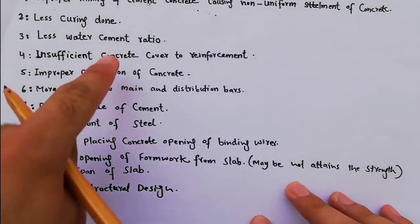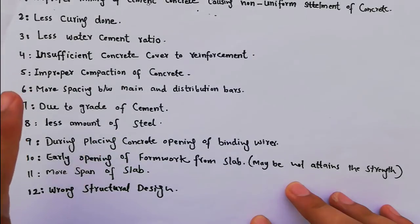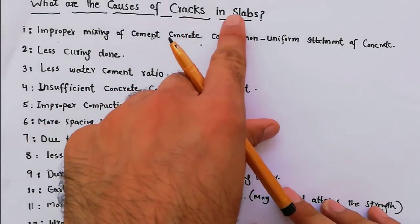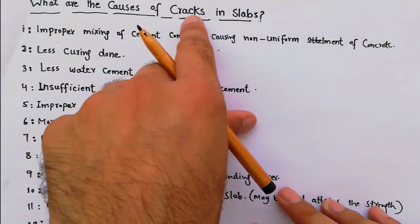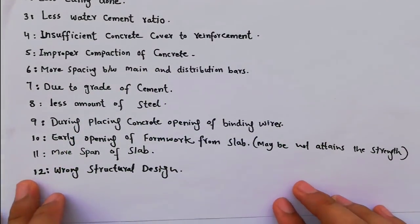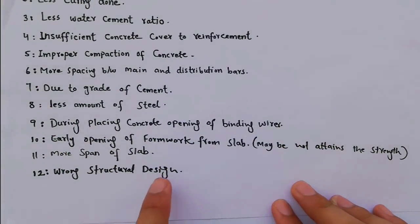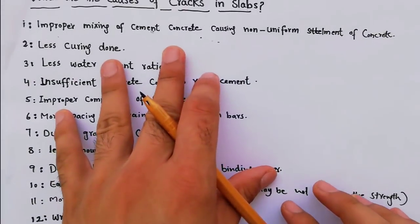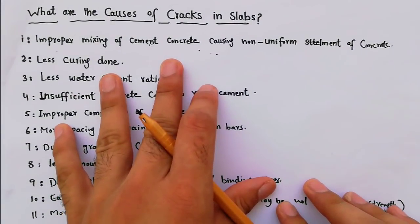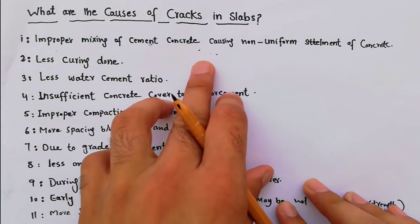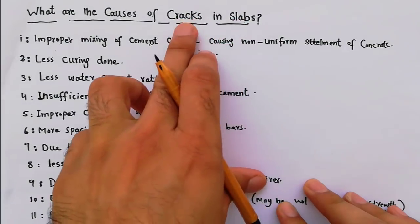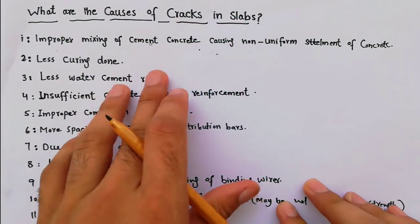Last one, everybody knows, if all points are clear and the slab still cracks, then the main reason is wrong structural design. So these are the 12 useful points behind slab cracking. These are the main reasons.